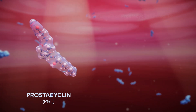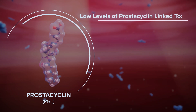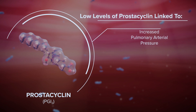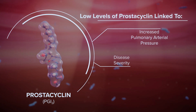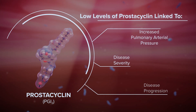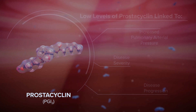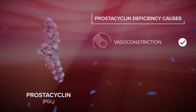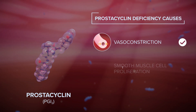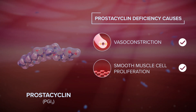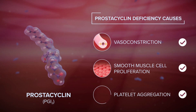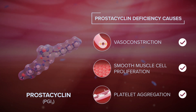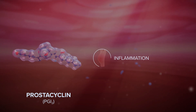Prostacyclin deficiency, resulting from disease-mediated injury to vascular endothelial cells, has been linked with increased pulmonary arterial pressure, worse disease severity, and higher risk of disease progression. Complications in the lungs caused by inadequate levels of prostacyclin include constriction of the small pulmonary arteries, hypertrophy and proliferation of vascular smooth muscle cells, and heightened risk of blood clotting. Additionally, data suggests insufficient prostacyclin levels may be associated with pulmonary arterial inflammation.